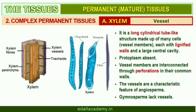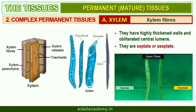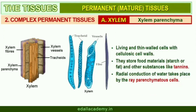A vessel is a long cylindrical tube-like structure made up of many cells called vessel members, each with lignified walls and a large central cavity. The vessel cells are also devoid of protoplasm. Vessel members are interconnected through perforations in their common walls. The presence of vessels is a characteristic feature of angiosperms. Xylem fibers have highly thickened walls and obliterated central lumens. Xylem parenchyma cells are living and thin-walled, with cell walls made up of cellulose. They store food materials in the form of starch or fat and other substances like tannins. Radial conduction of water takes place by these parenchymatous cells.